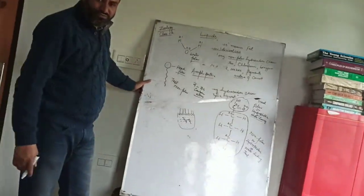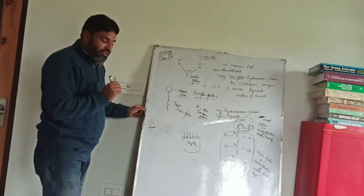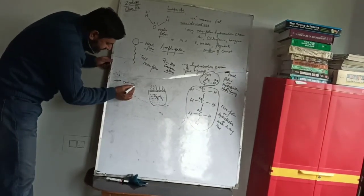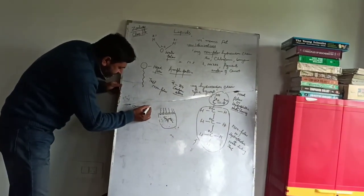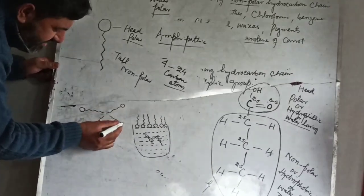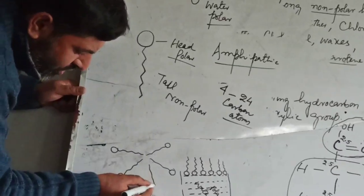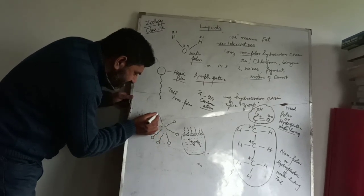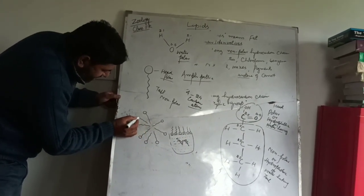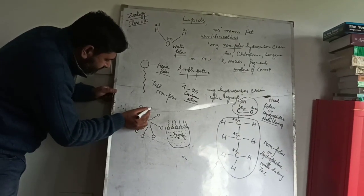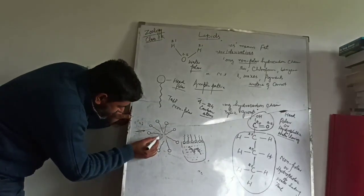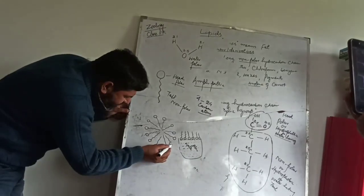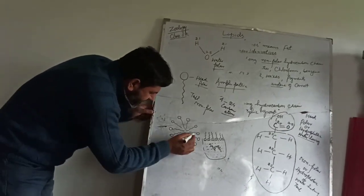Besides that, these fatty acid molecules can also form micelles. Micelles means their nonpolar tails are directed inwards and their polar heads are directed outwards, as you see in the diagram. So these nonpolar tails are directed inwards, while polar heads are directed outwards towards the water.